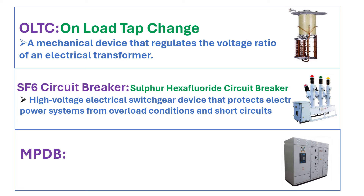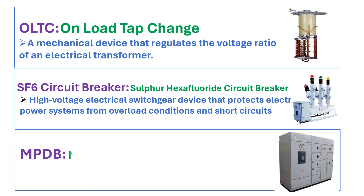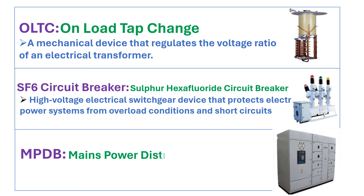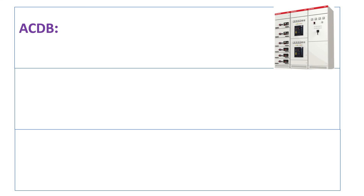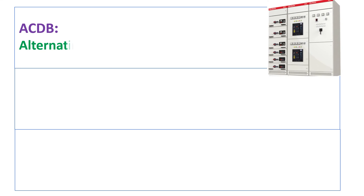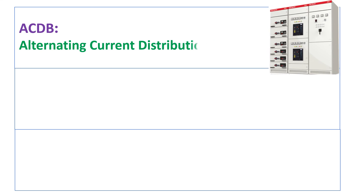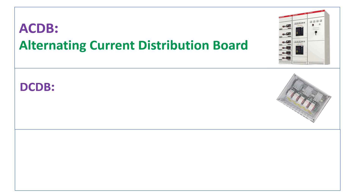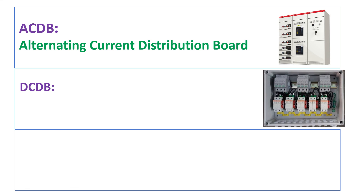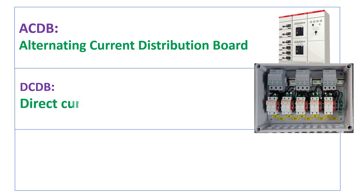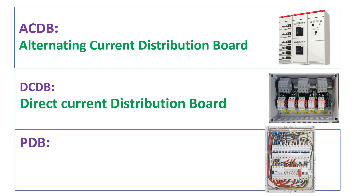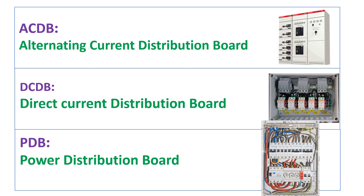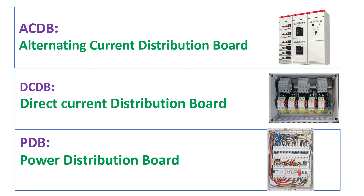MPDB stands for main power distribution board. ACDB stands for alternating current distribution board. DCDB stands for direct current distribution board. PDB stands for power distribution board.